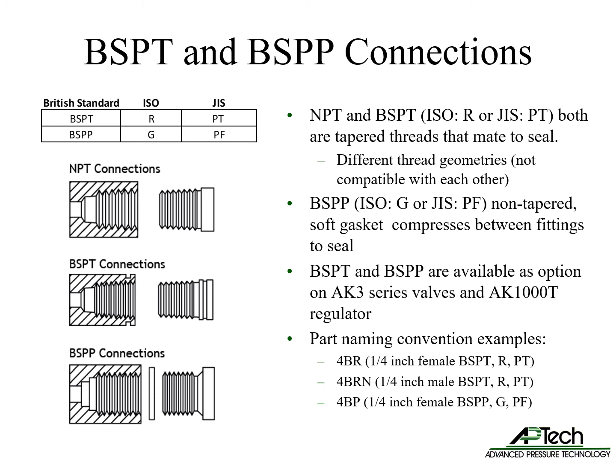BSPT and BSPP connections are also available on select products. The tapered BSPT connection is also called R in ISO and PT in JIS naming conventions. BSPT is similar in function to an NPT connection, but the thread geometries are not compatible. BSPP is non-tapered and uses a soft gasket compressed between a male and female fitting to seal. These connections are available as standard options on AK-3 series valves and the AK-1000T regulator. Examples of the naming convention include 4BR or 4BRN for 1/4 inch female and male BSPT connection respectively, and 4BP for a 1/4 inch female BSPP connection.